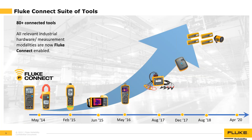For example, the 376 FC clamp meter, 1664 FC installation tester, and T3000 FC temperature module are all Fluke Connect enabled. The only exception is the Fluke suite of thermal image cameras — most work with Fluke Connect but do not include FC in the model name. Fluke Connect is available in over 73 different countries, and the measurement software is 100% free.